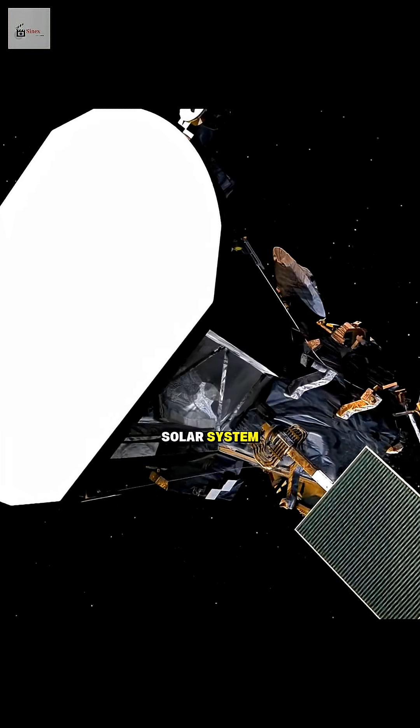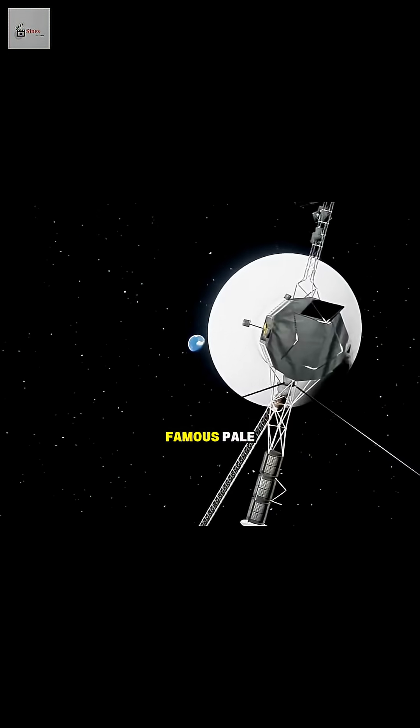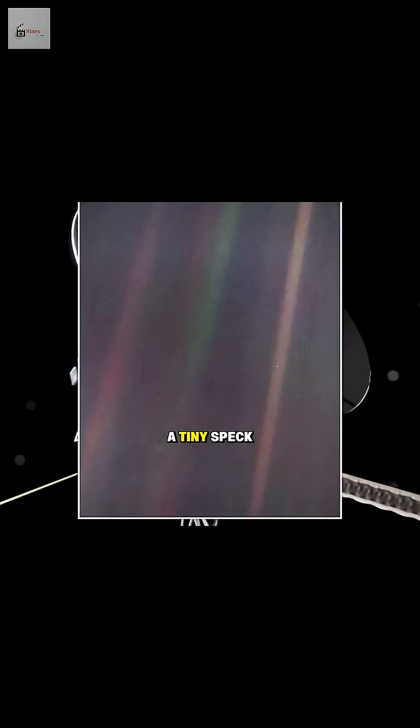Before leaving the solar system, it turned around and took the famous pale blue dot photo, showing Earth as a tiny speck floating in the vastness of space.